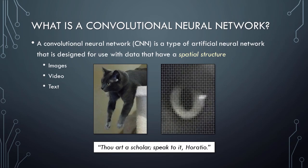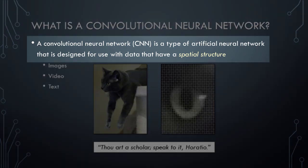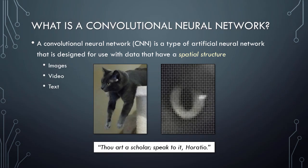To begin, let's develop an intuitive understanding of what convolutional neural networks are and why they are useful. Put simply, a convolutional neural network, or CNN, is a type of artificial neural network that is designed for use with data that have a spatial structure. Examples of data that have spatial structures include images, videos, and text. Although CNNs can be used with text, they are primarily used for computer vision related tasks, so we'll focus primarily on image-based input in this video.